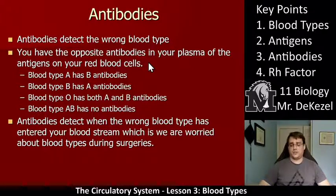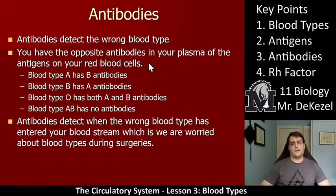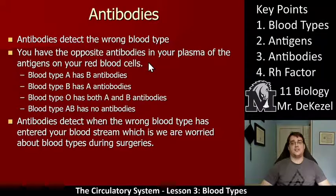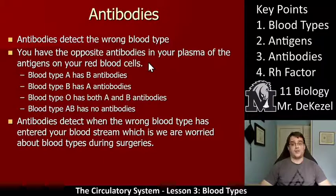So there are no available antibodies out there for AB. Antibodies detect when the wrong blood type has entered your bloodstream, which is why we are worried about blood types during surgeries. In the olden days they used to give just any type of blood to anybody and people would not react well. It is because our antibodies would attack the antigens on the red blood cells. That is more the focus for next lesson — just a little preview.